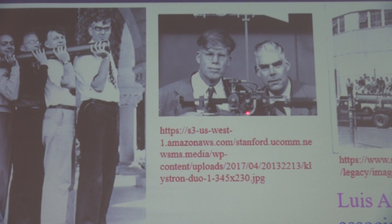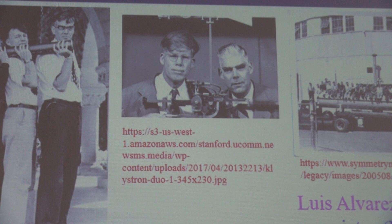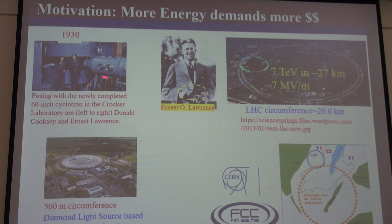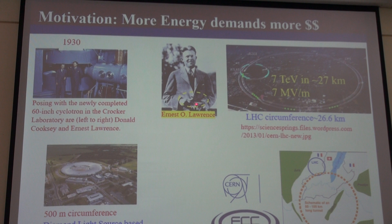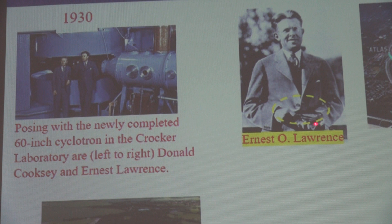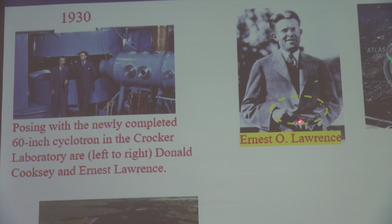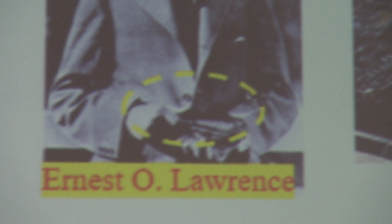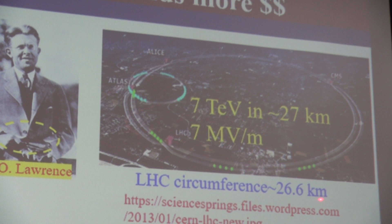Now going to circular accelerators: in 1930, Lawrence was holding a circular accelerator in his hand. Now that has grown to the LHC — 26.6 kilometers, the biggest machine on the surface of the Earth, where the Large Hadron Collider operates. A single beam is about 7 tera-electron volts, so in collision it's about 13 tera-electron volts. It's a huge energy.